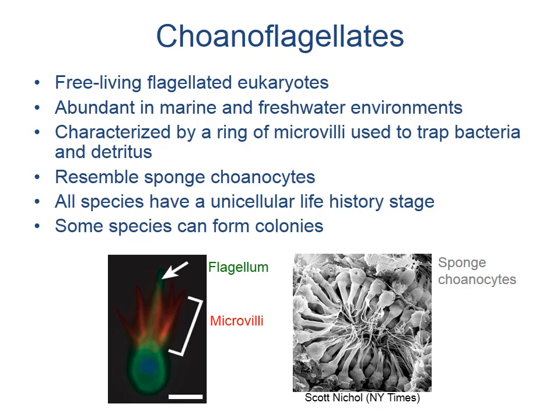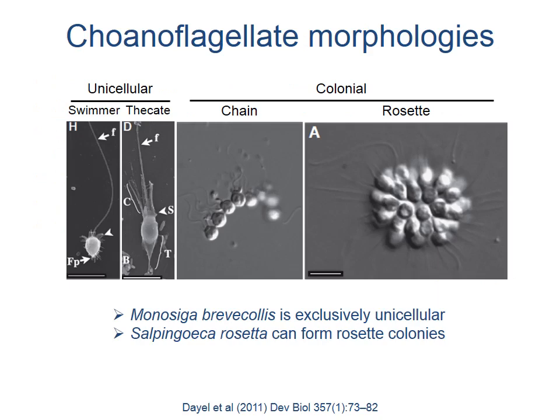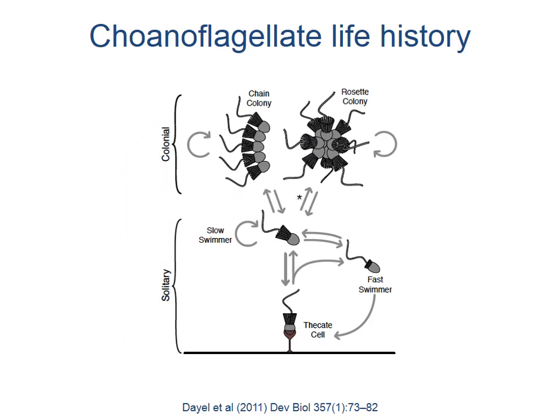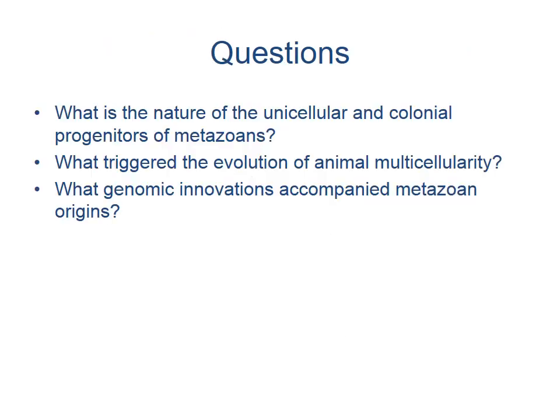Some species are able to form multicellular colonies. Choanoflagellates can be unicellular or colonial: Monosiga brevicollis is exclusively unicellular, while Salpingoeca rosetta is able to form rosette colonies. Colonial species can shift between different forms — fast-swimming unicellular cells can settle onto the benthos as thecate cells, while slow-swimming unicellular cells can form chain colonies or rosette colonies.